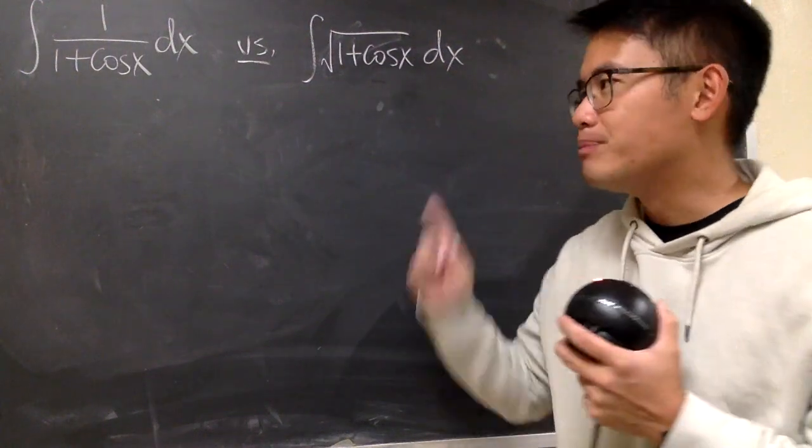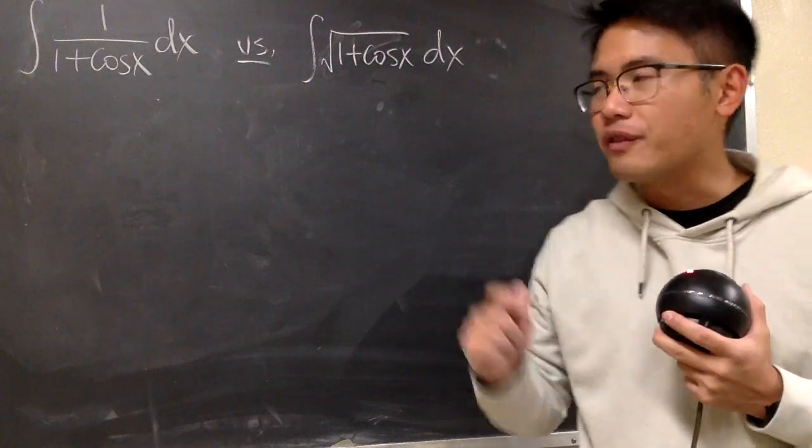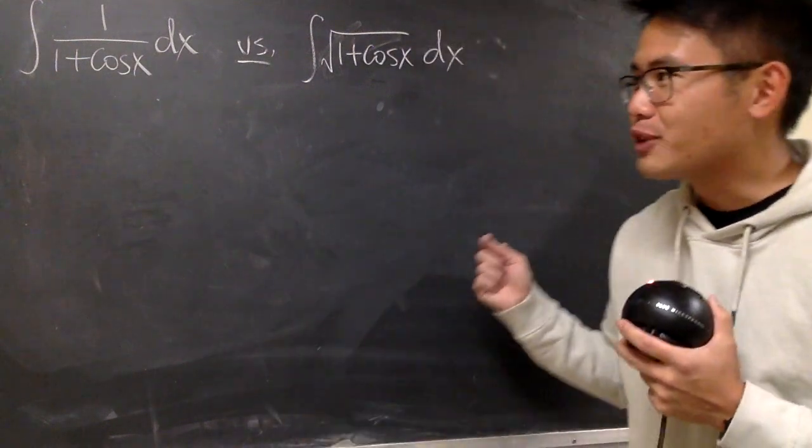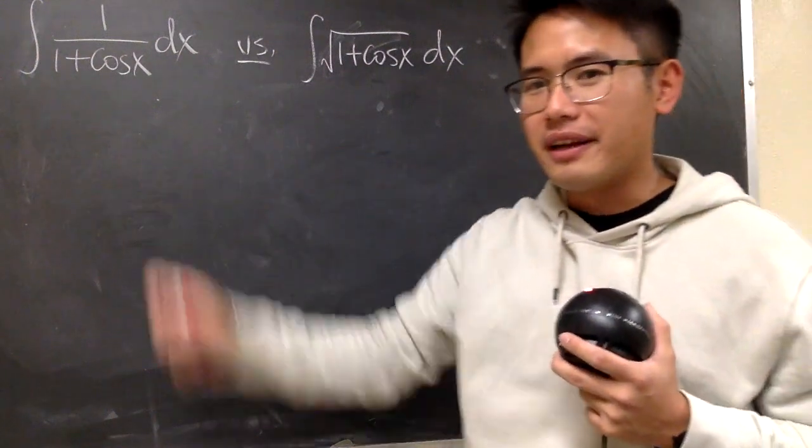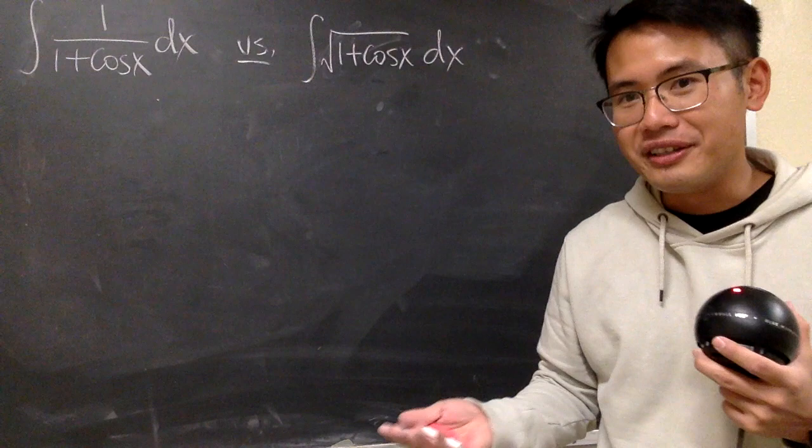Okay, I have two integrals on the board, and both of them have the 1 plus cosine x. In fact, I'll show you guys how to solve these two integrals in just one, two, two lines. So this is going to be a super shortcut to these two particular integrals.